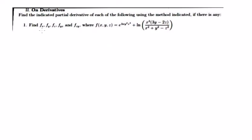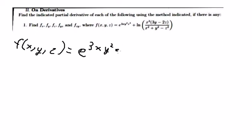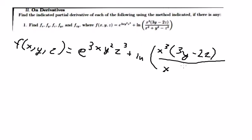So now I will show you the technique how to find Fx, Fy, Fz, Fyz, and Fzy. We have this equation: F(x, y, z) equals e to the power of 3x·y squared, times z to the power of 3x, plus ln of x to the power of 3x multiplied with 3y, minus 2z, over x squared plus y squared minus z squared.